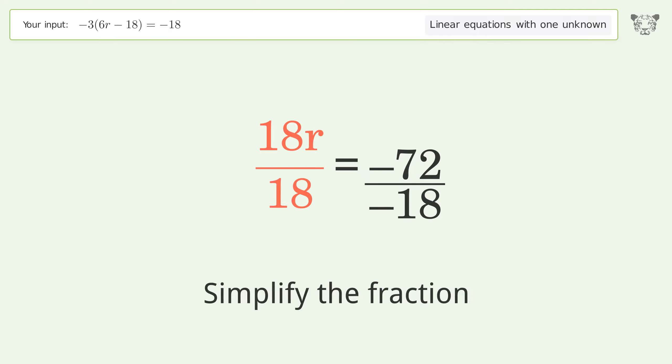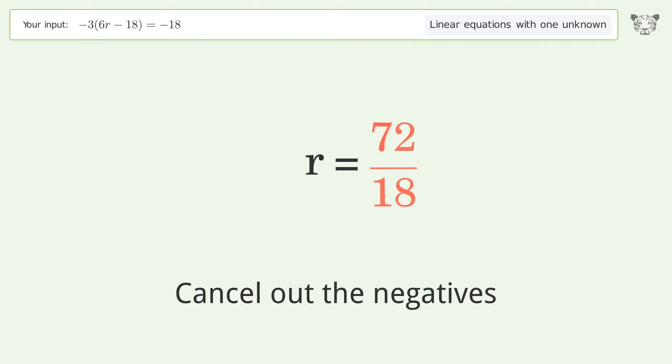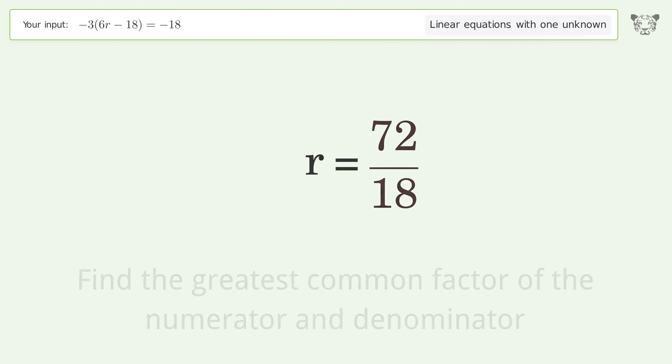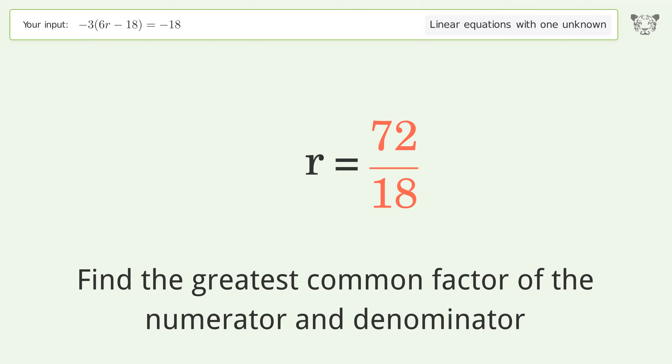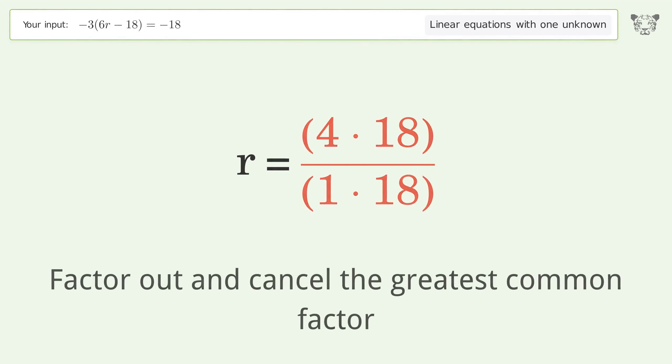Simplify the fraction. Cancel out the negatives. Find the greatest common factor of the numerator and denominator. Factor out and cancel the greatest common factor.